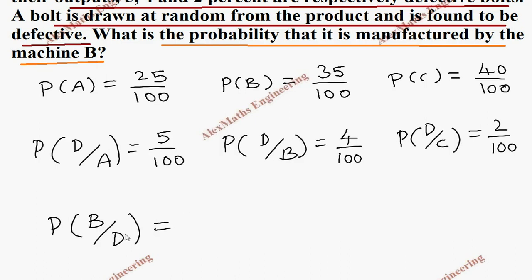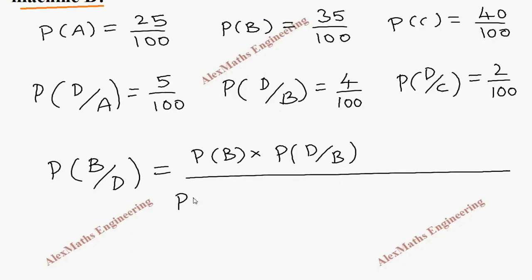So, we are going to write the formula for Bayes' theorem. For that, we write the numerator into its reciprocal D by B. Now, we have to write the total probability for A, B and C.